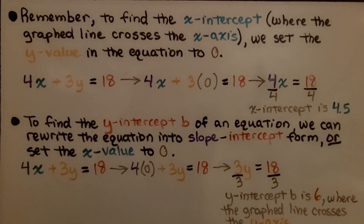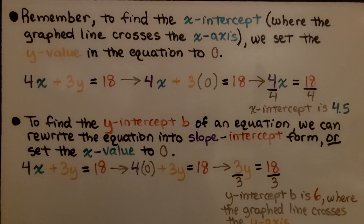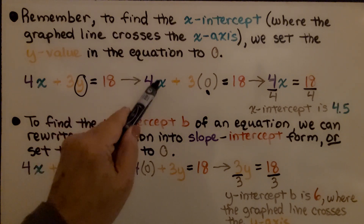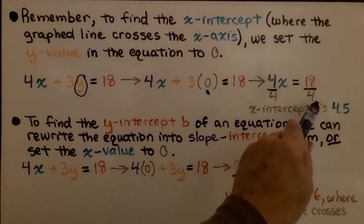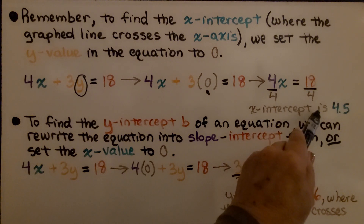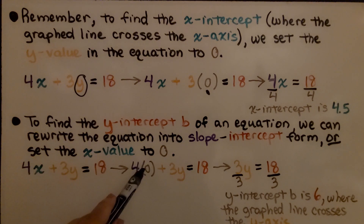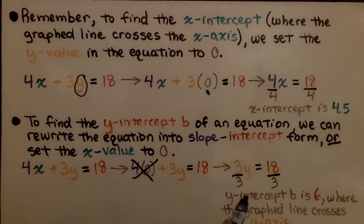To find the x-intercept, where the graphed line crosses the x-axis, we set the y-value to 0. For the equation 4x plus 3y equals 18, setting y to 0 gives 4x equals 18. Dividing both sides by 4 gives an x-intercept of 4.5. For the y-intercept, we set x to 0: 3y equals 18, so dividing by 3 gives a y-intercept of 6.